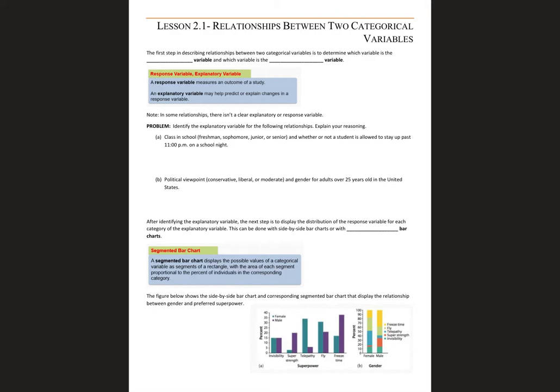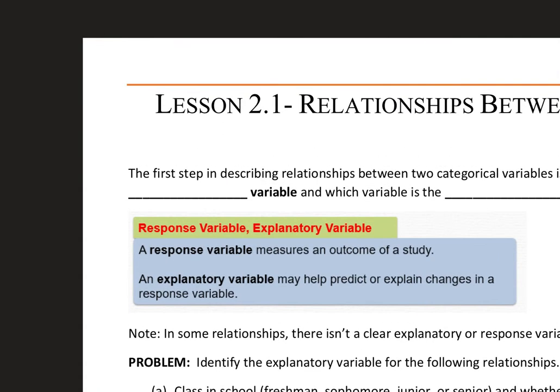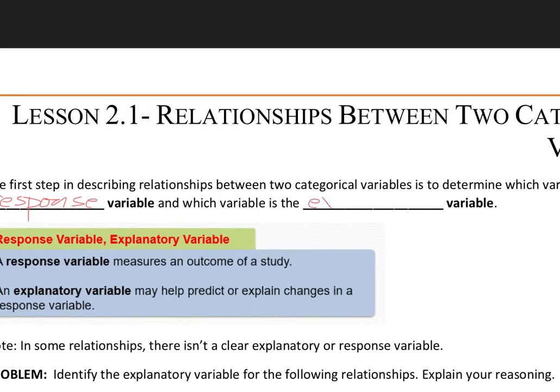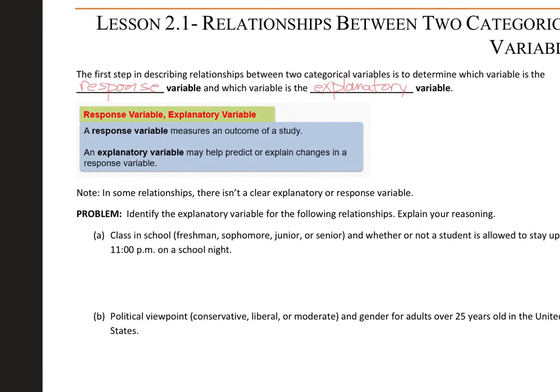When there are two variables, one of them is going to be the response to the other. So we'll have a response variable, and then the other one explains that response — we call that the explanatory variable. We try to think of which one causes which one. A response variable measures the outcome, whereas an explanatory variable is the thing that helps us predict that outcome or helps us predict that response variable.